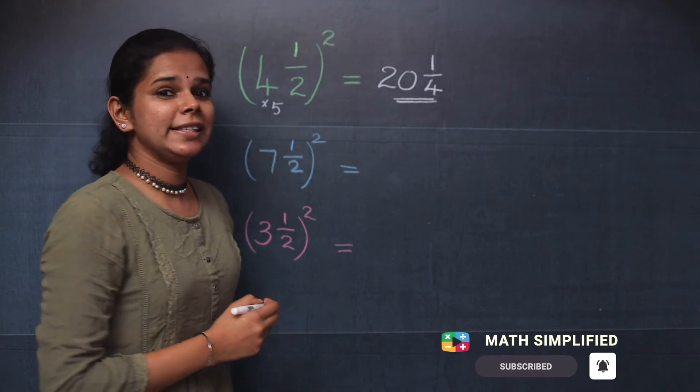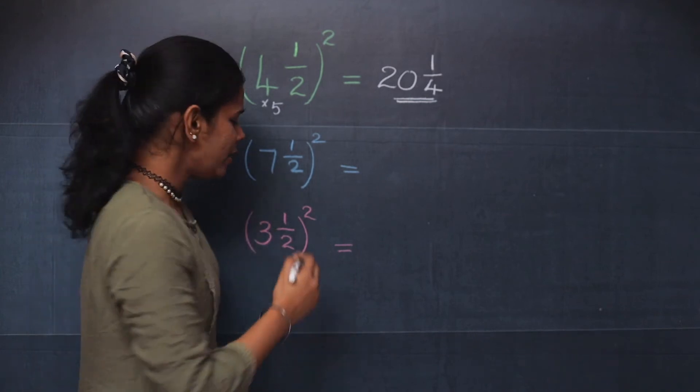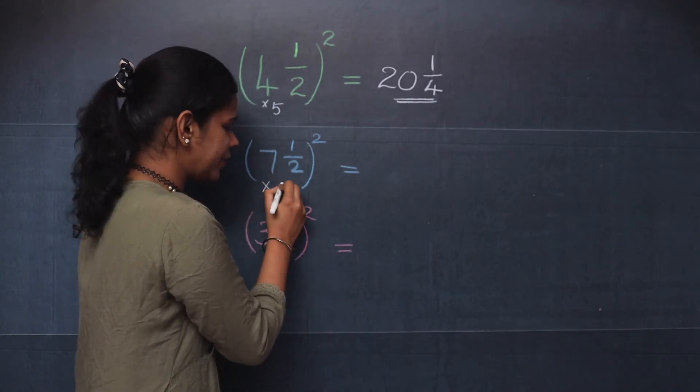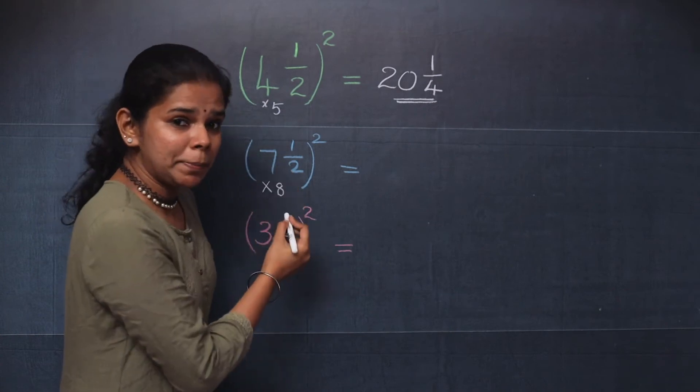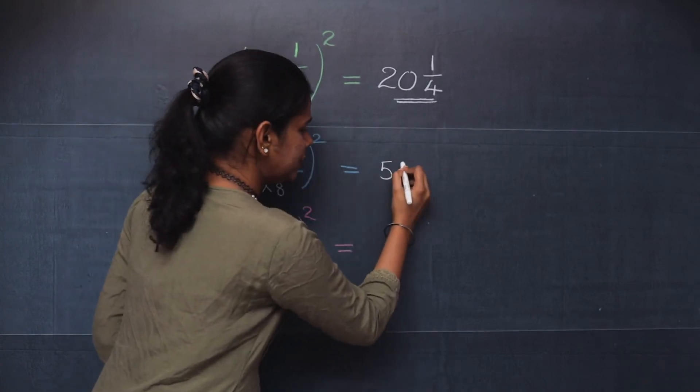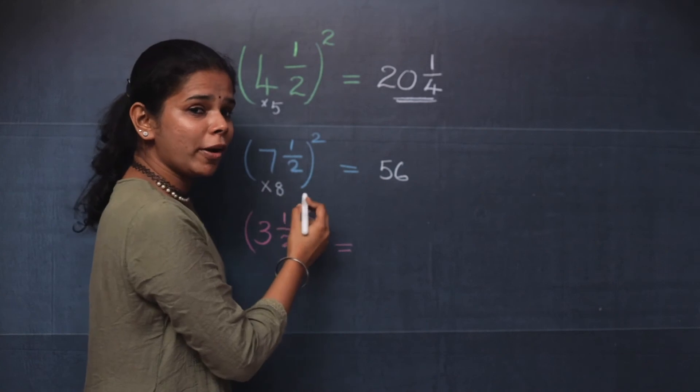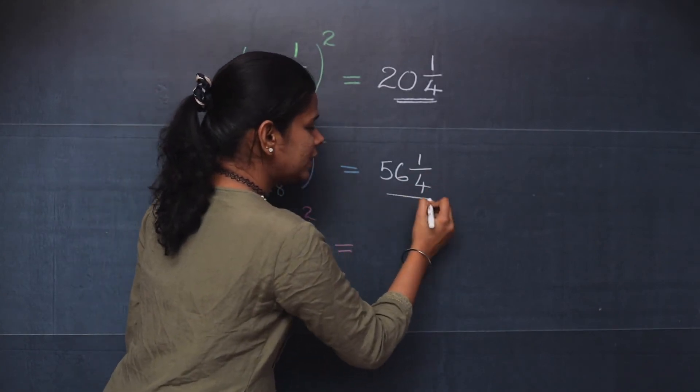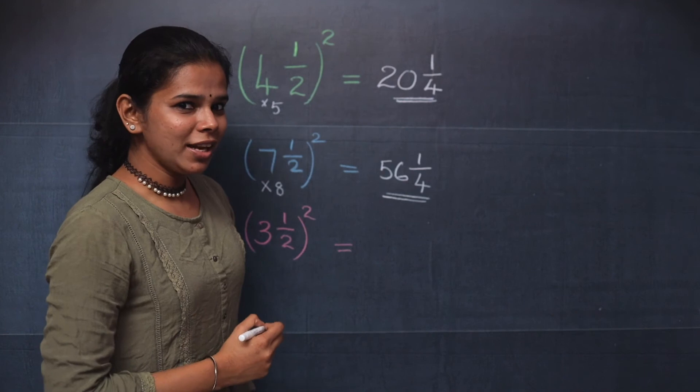Moving on to the next question, 7 1 by 2 the whole square. The next number after 7 is 8, so 7 multiplied by 8 is 56. And then the square of 1 by 2 is 1 by 4. So 56 1 by 4 will be your answer.